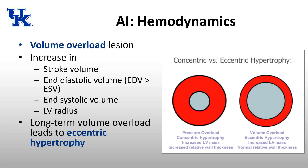Cardiac lesions are thought of as either pressure overload or volume overload lesions. Aortic insufficiency is a volume overload lesion: there is an increase in stroke volume, end diastolic volume, end systolic volume, and left ventricular radius. While both end diastolic and systolic volume increase, the end diastolic volume increases more. This long-term volume overload eventually leads to eccentric hypertrophy — a larger LV diameter with normal wall thickness but increased LV mass — as opposed to concentric hypertrophy where the LV size decreases and the wall thickens.